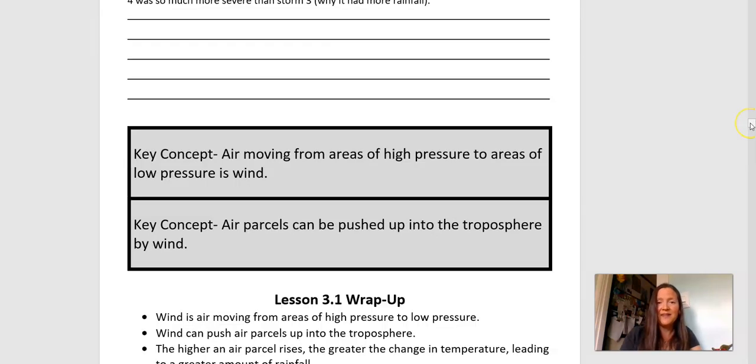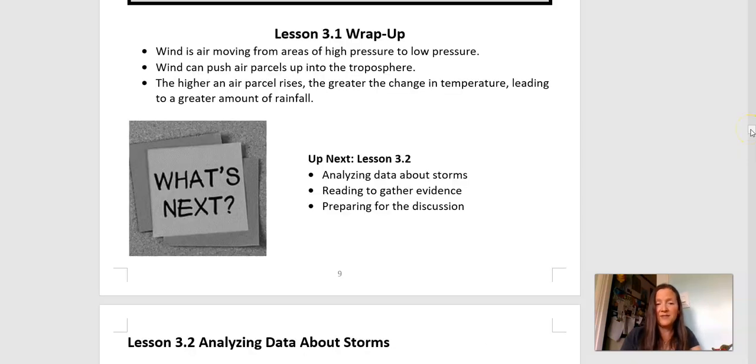All right. So to summarize this particular lesson, our key concepts are air moving from areas of high pressure to areas of low pressure is called wind. And air parcels can be pushed up into the troposphere by wind. And yes, there's some good data to suggest that the higher an air parcel rises, the greater change in temperature, which leads to a greater amount of rainfall. And what we noticed in this lesson is that wind will push the air parcel even further up, resulting in more rainfall. So what are we going to do next? Next, we're going to analyze some more evidence and some more data, and then we're going to get ready to organize our thoughts for our discussion, which is coming later this week.